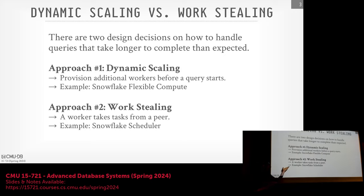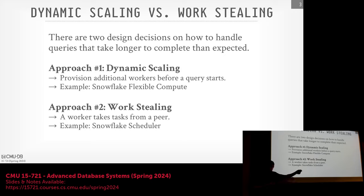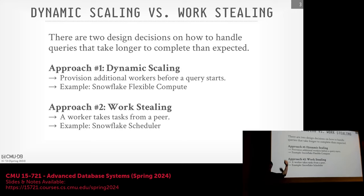Work stealing allows a worker to take work from another peer. The question is whether the stealing worker — the stealer — should go get data from the stealee directly, or go back to distributed storage like S3. It depends on the implementation. Snowflake always goes back to remote storage so they don't slow down the straggler worker, but in Hyper, it goes directly from the worker CPU since everything was in memory. These are just additional design decisions when building a larger system.